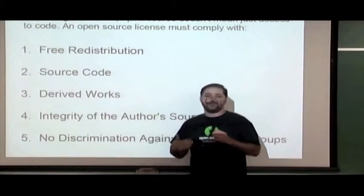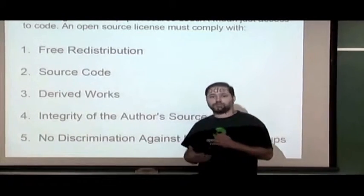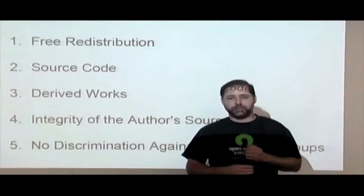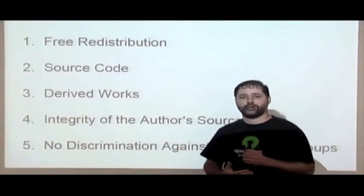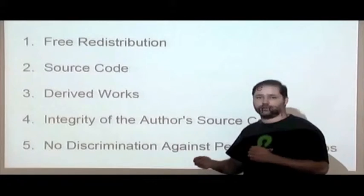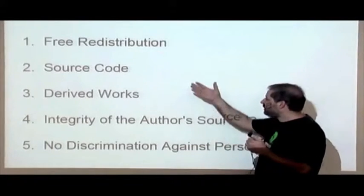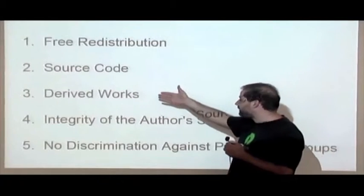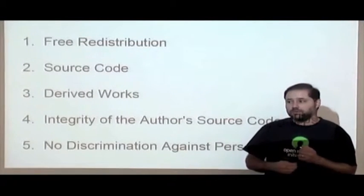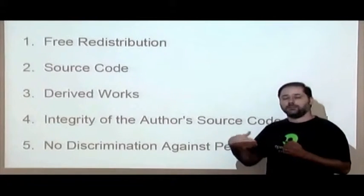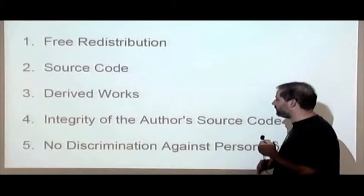An open source license must allow you to freely redistribute the software — not only in its source code but also in binary form, so everyone has access to the software itself. Of course the source code must also be available; just having access to the binary isn't enough, you need the source code to actually do something with the software. And once you have the source code, you must be able to create derived works — get the source, modify it, and create a different software based on the original.